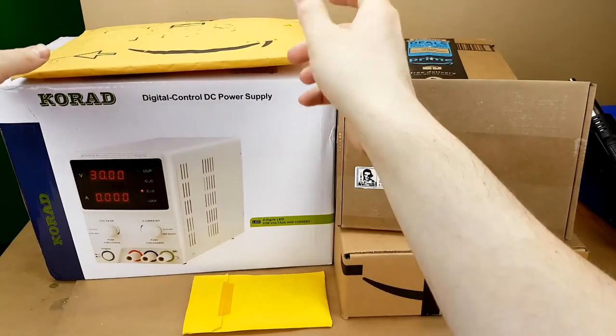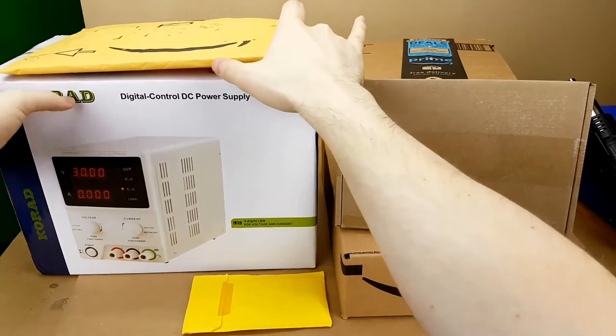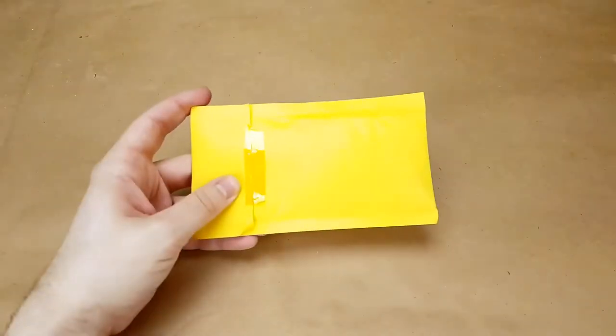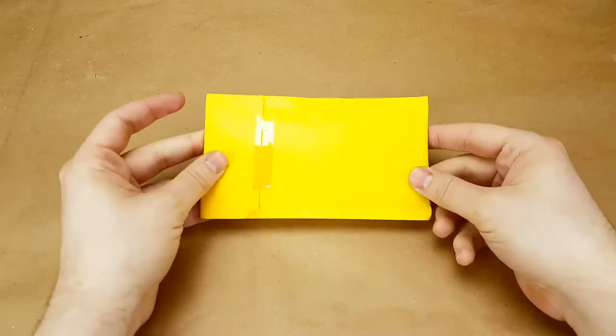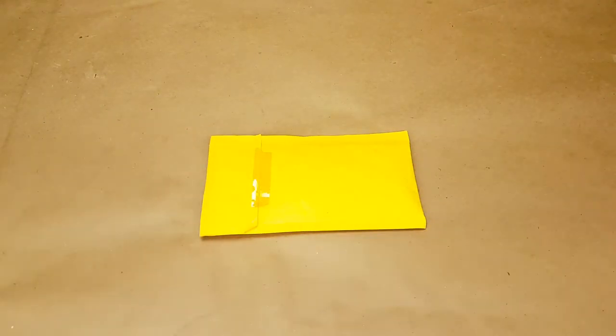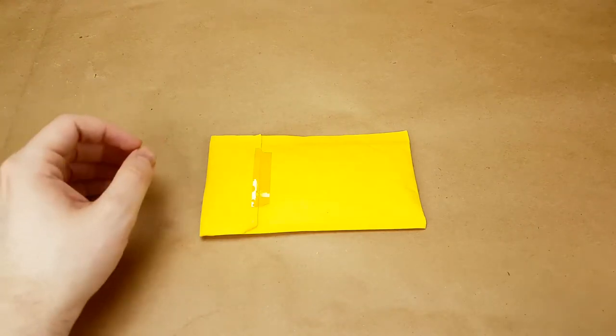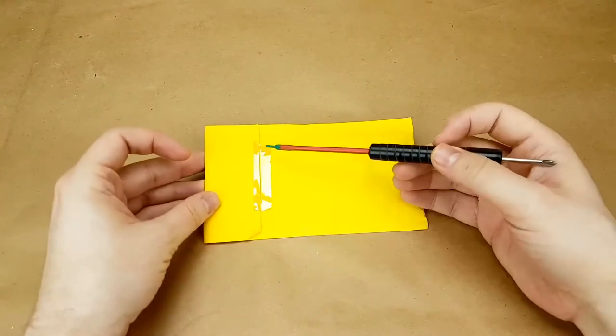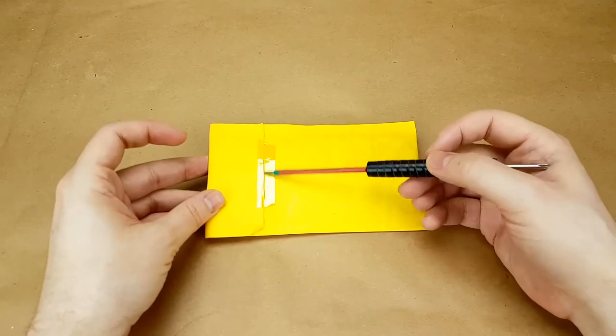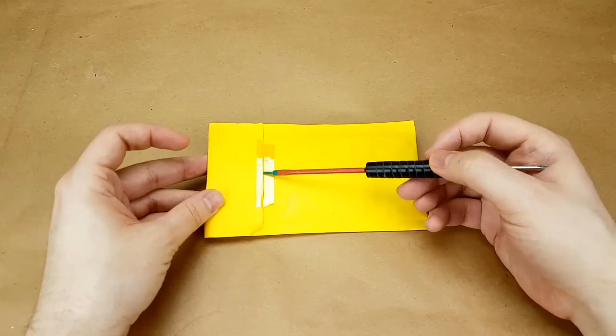I think I'll start with the smallest item first. First up here we have a little yellow envelope. Now I do know what's inside this envelope, and I know who sent it to me. You can clearly see that it's going to have something to do with electronics because they used Kapton tape on the envelope to seal it.